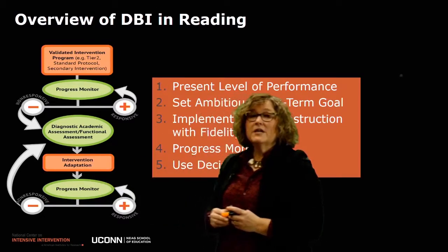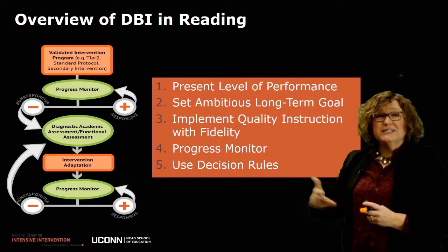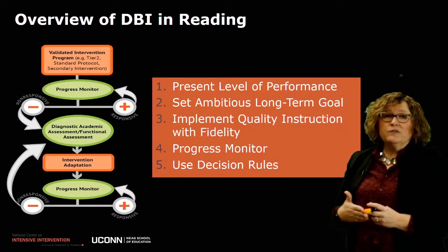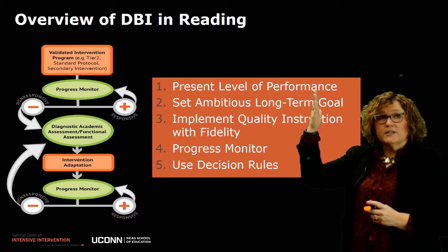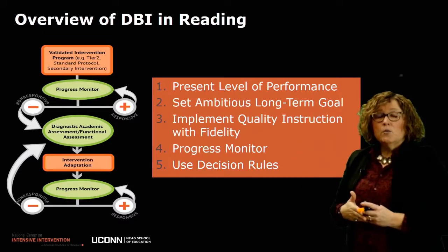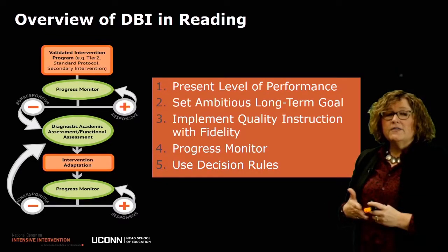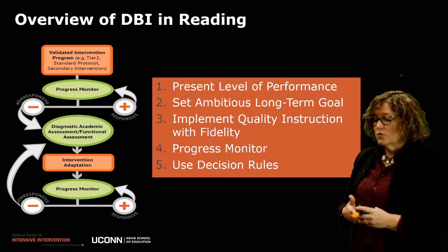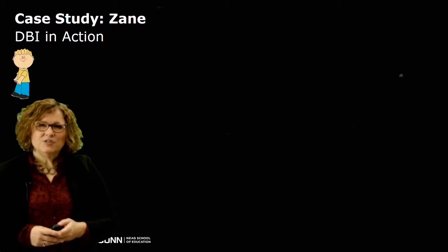It's really important to continue that cycle of progress monitoring and determination of responsive or non-responsive to intervention, in order to make good decisions about what's working or not working for a particular student. As we move through these steps, we're going to talk more about present level of performance, setting goals, implementing high-quality instruction with fidelity, collecting progress monitoring data, and using decision rules to decide whether to continue current instruction or make a change.